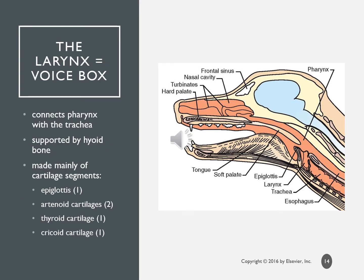The larynx is also the voice box, though we don't refer to it that way in animals. It is supported by the hyoid bone, which can look like a foreign body on x-ray. It is made mainly of cartilage: the epiglottis, arytenoid cartilage, thyroid cartilage, and cricoid cartilage — all structures you see when passing an endotracheal tube. You may have to lift the epiglottis to view the arytenoids to pass the tube.